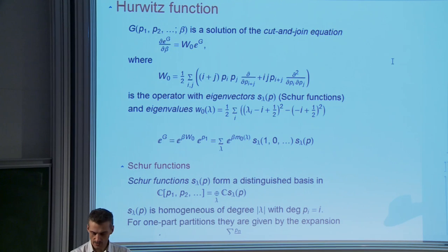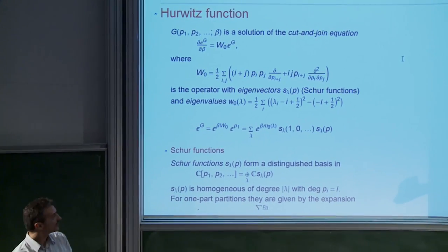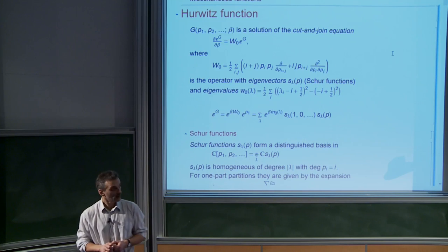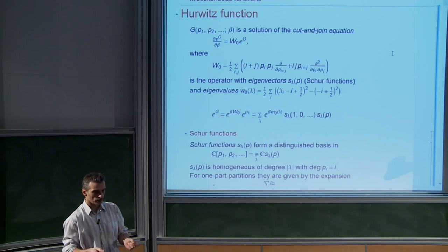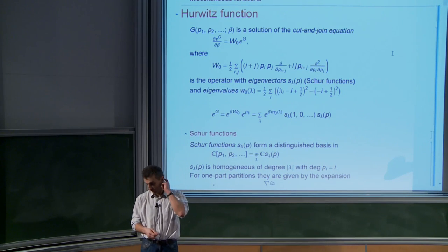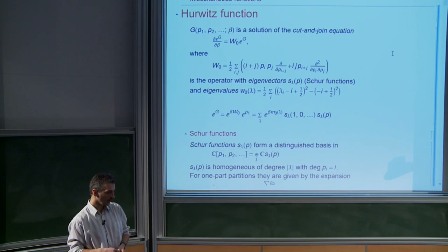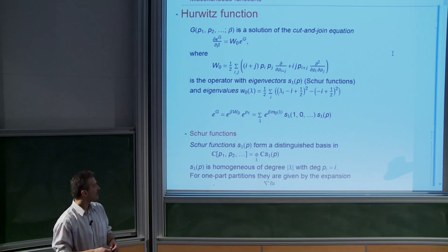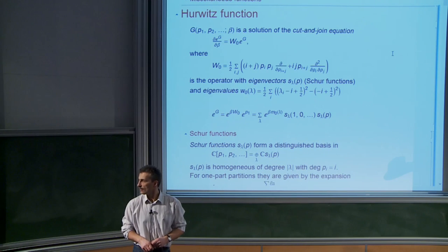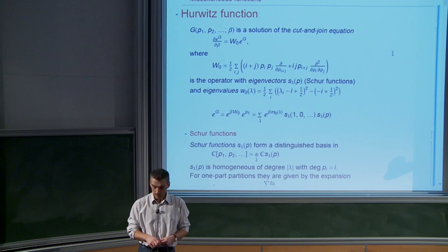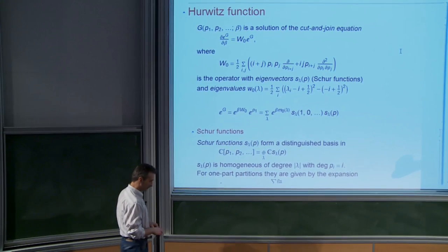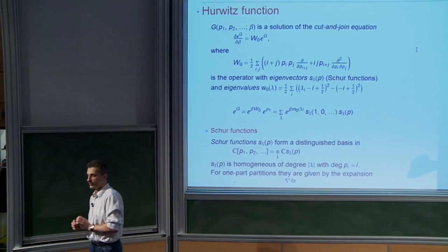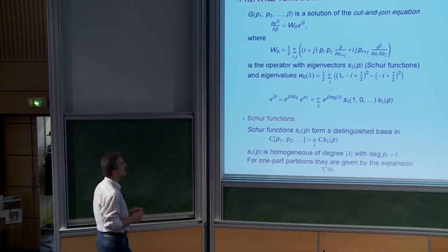We should analyze what happens to a permutation when we multiply it by a transposition. A simple geometric consideration shows that if the transposed elements belong to one cycle, then this cycle splits into two smaller cycles. If the transposition connects two points from different cycles, then the product creates a larger cycle consisting of the elements of those two smaller cycles. So either two cycles join together, or one cycle splits into smaller ones. This is some combinatorics or geometry behind the construction.